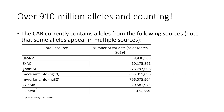What's in the Allele Registry? As of March 2019, there were over 910 million alleles, with more variants being added constantly. The CAR regularly catalogs variants from dbSNP, ExAC, gnomAD, myvariant.info, COSMIC, and ClinVar. Most of these resources are relatively stable and the CAR pulls in new variants as each resource is updated. ClinVar is more frequently updated than the rest, so the CAR pulls variants from ClinVar every two weeks. In addition to these resources, the CAR accepts alleles registered by users, including variants described in the literature.